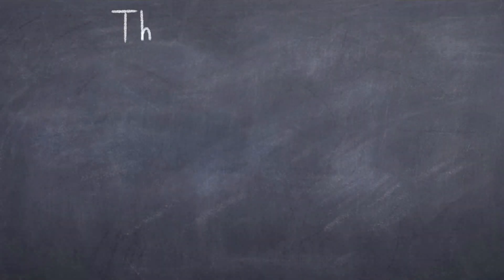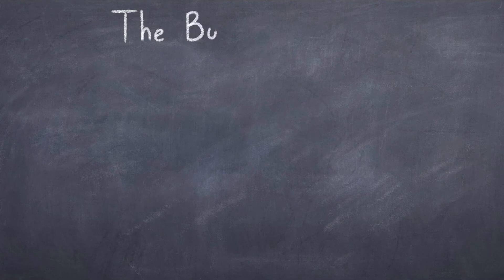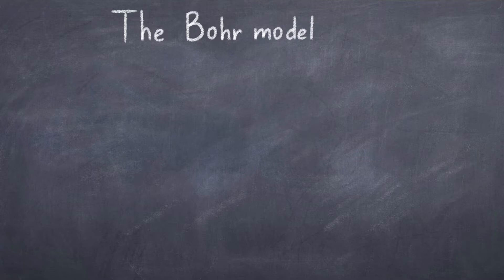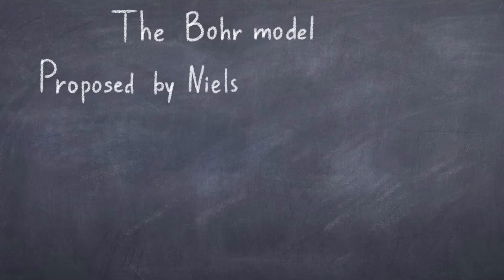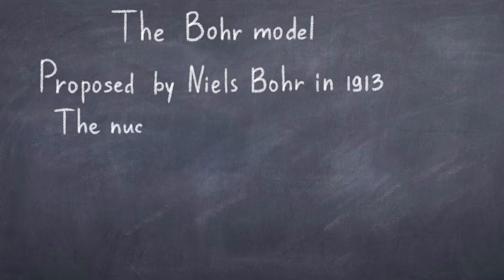In school most people get introduced to the Bohr model. This model was put forward by Danish scientist Niels Bohr in 1913, as an improvement to Rutherford's model from 1911. While the Bohr model is not completely correct, it was still a big step forward, and his work on the atomic structure and quantum mechanics gave him the Nobel Prize in 1922.